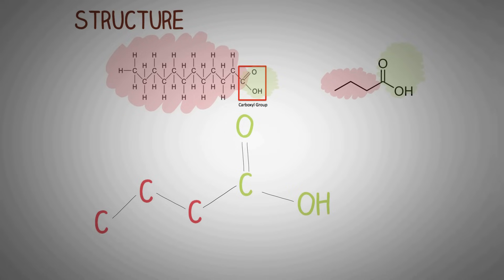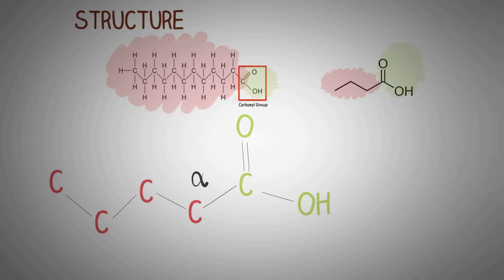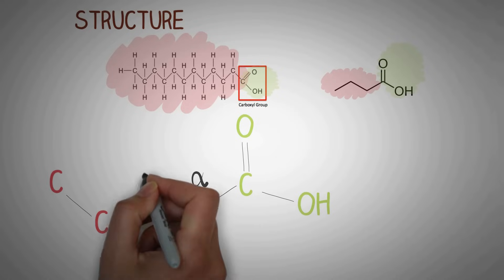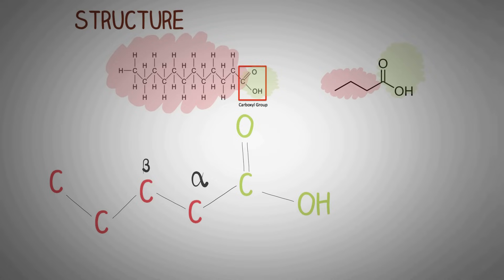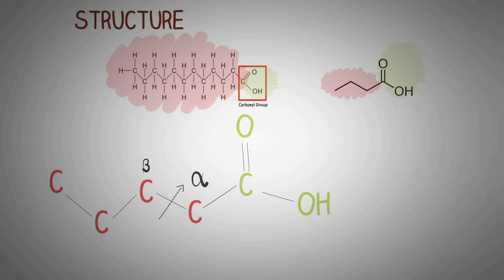The R side chain consists of a single chain of carbon and hydrogen atoms. The carbon atom directly attached to the functional group is known as the alpha carbon, and the carbon atom next to the alpha carbon is the beta carbon. In beta oxidation of fatty acids, the R chain is broken down between the alpha and beta carbons — and hence the name beta oxidation.